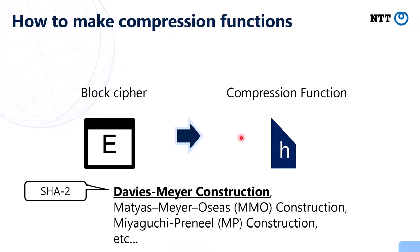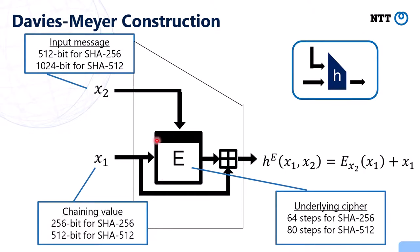In summary, the Merkle-Damgård construction converts a small compression function of fixed input-output lengths into a large hash function of variable input lengths. To make a compression function, we usually use a block cipher, then convert it into a compression function using constructions such as the Davies-Meyer construction, MMO construction, or MPA construction. SHA-2 uses the Davies-Meyer construction: the key of the block cipher corresponds to the compression function input, the message corresponds to the chaining value, and the output of the block cipher is added with the chaining value.